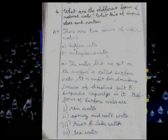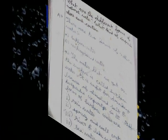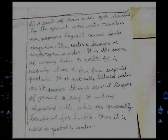Different forms of surface water are rainwater, spring and well water, river and lake water, and sea water. Underground water: A part of rainwater gets absorbed by the ground. When water reaches a non-porous layer, it cannot sink any further; this water is known as underground water. It is the source of many lakes and wells. It is very clear and free from suspended particles, as it is naturally filtered as it passes through several layers of gravel and sand. It dissolves salts which are generally beneficial for our health, and thus it is used as potable water.